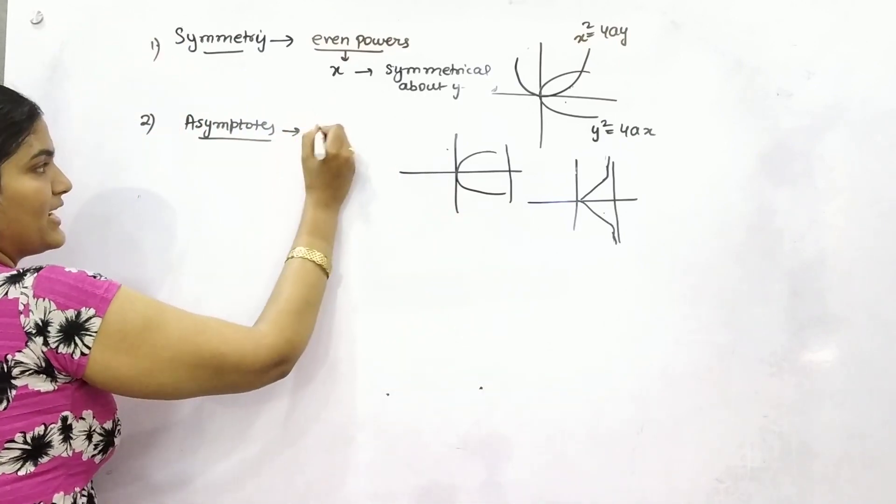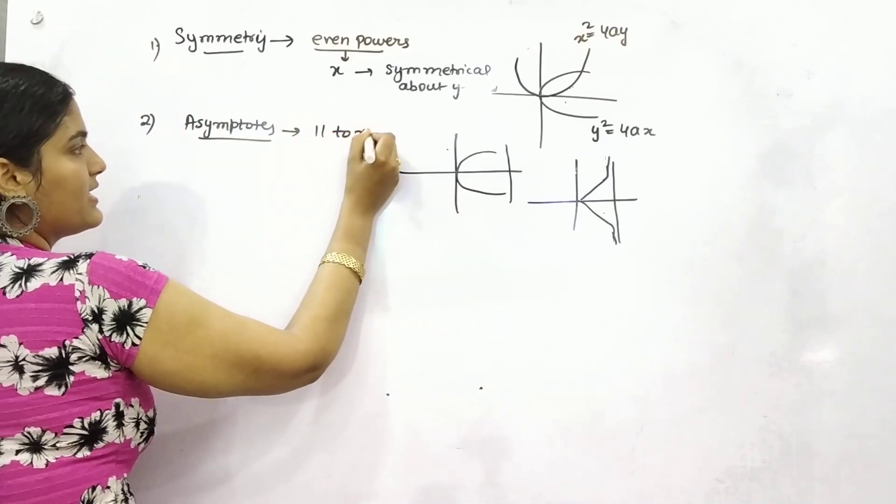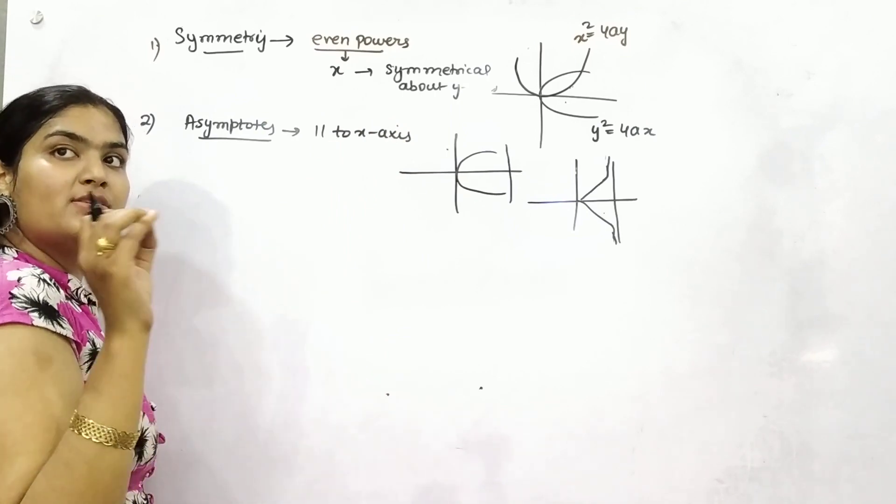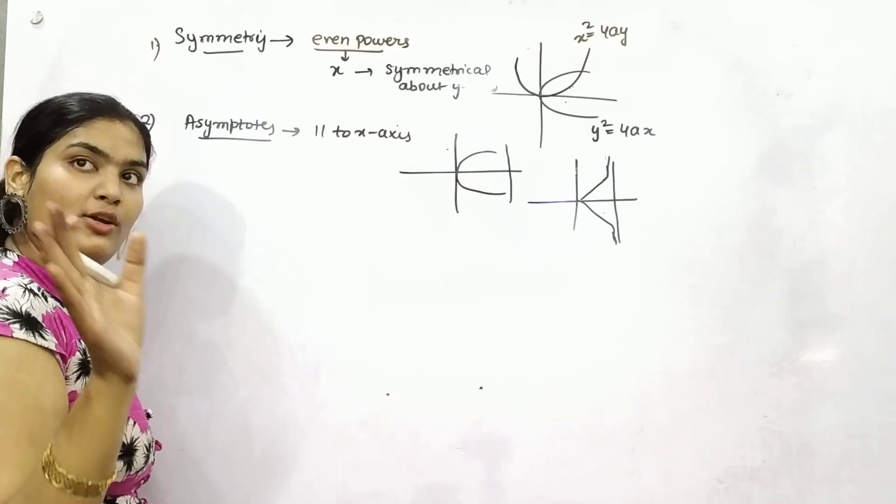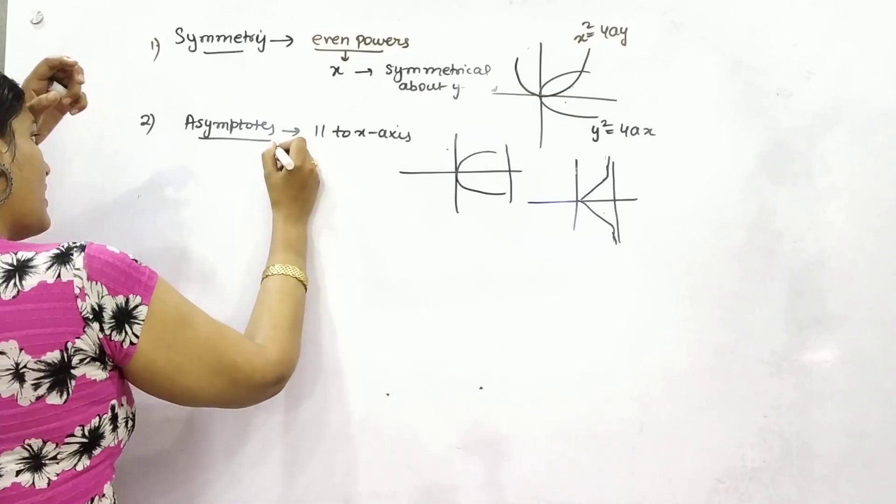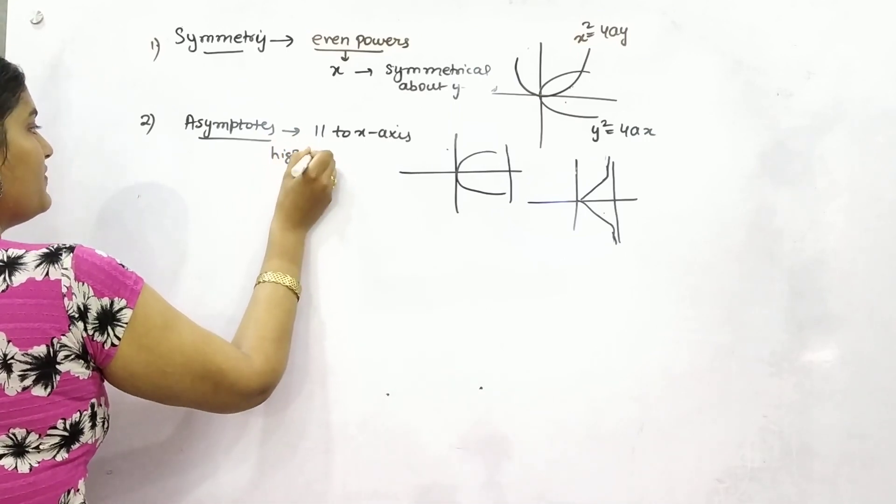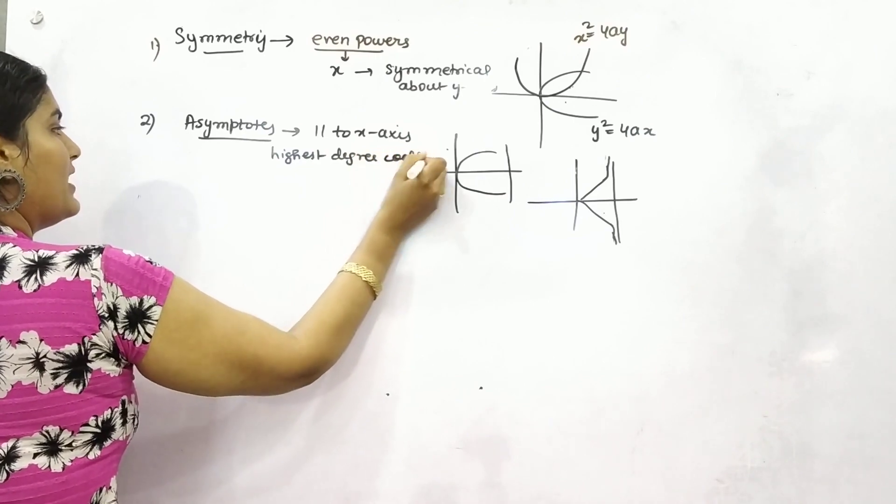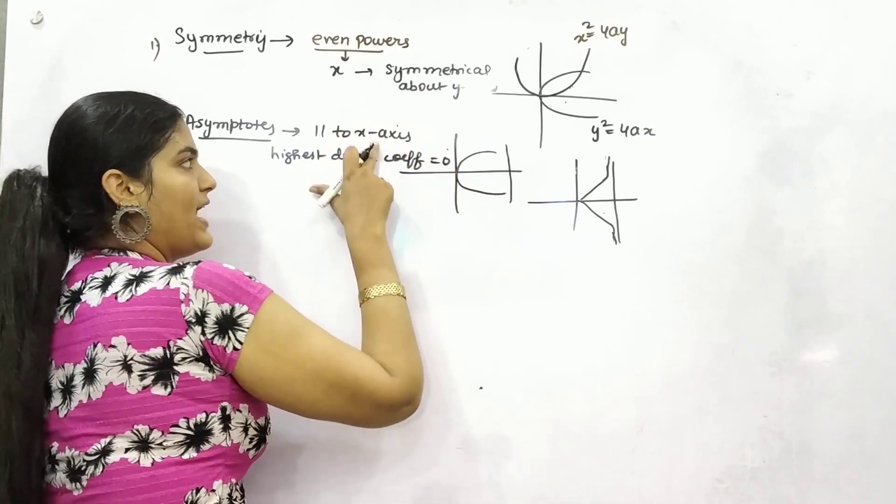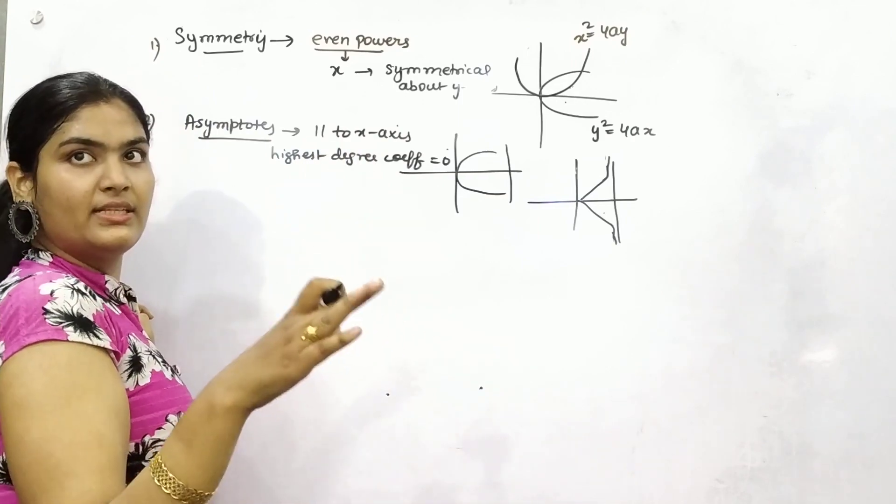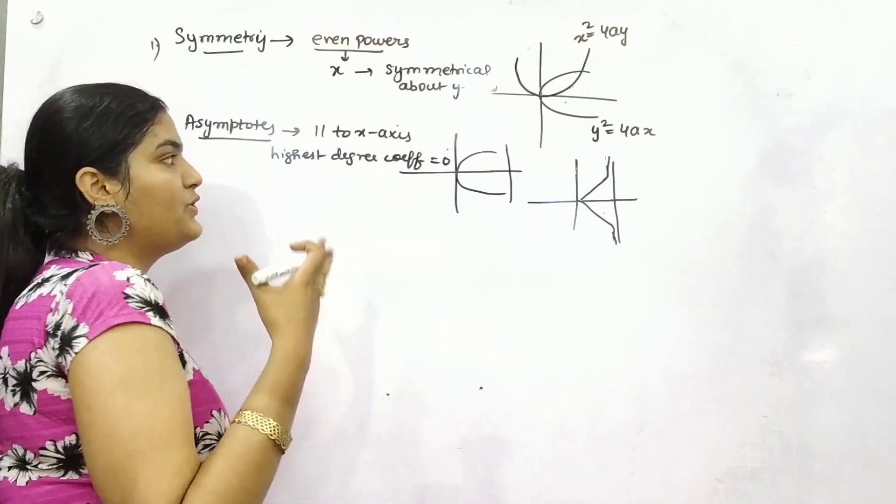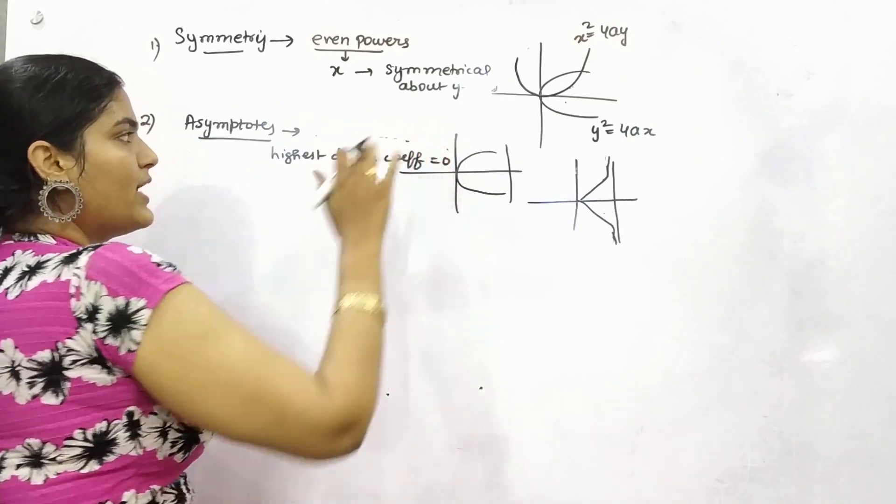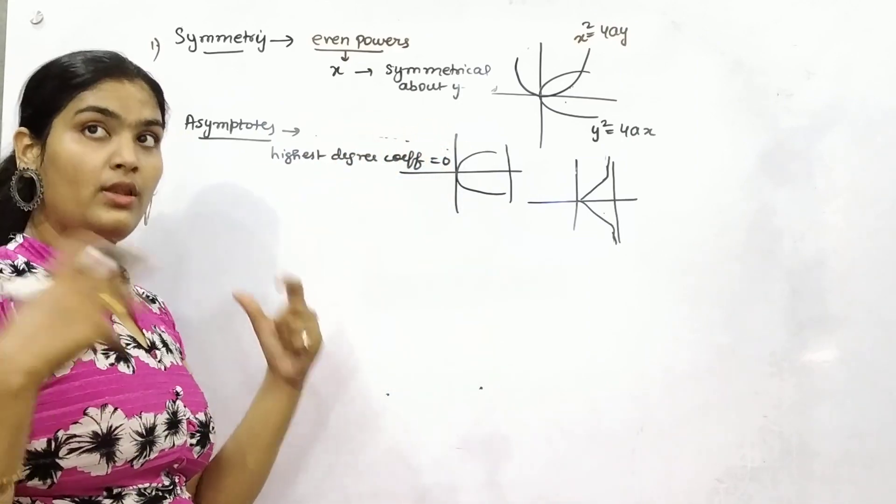You need to check whether it is parallel to x-axis. Find the highest degree coefficient and put it as 0. If it is the highest degree coefficient of x, then it will be parallel to x-axis. If it is the highest degree coefficient of y, then it will be parallel to y-axis.